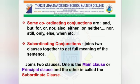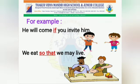Subordinating conjunctions join two clauses or sentences, one of which is dependent or subordinate to the other for expressing its full meaning. It joins a main clause and a subordinate clause. For example: He will come if you invite him. Here, 'if' is the subordinating conjunction. It joins 'he will come', which is the main clause, and 'you invite him', which is the subordinate clause.